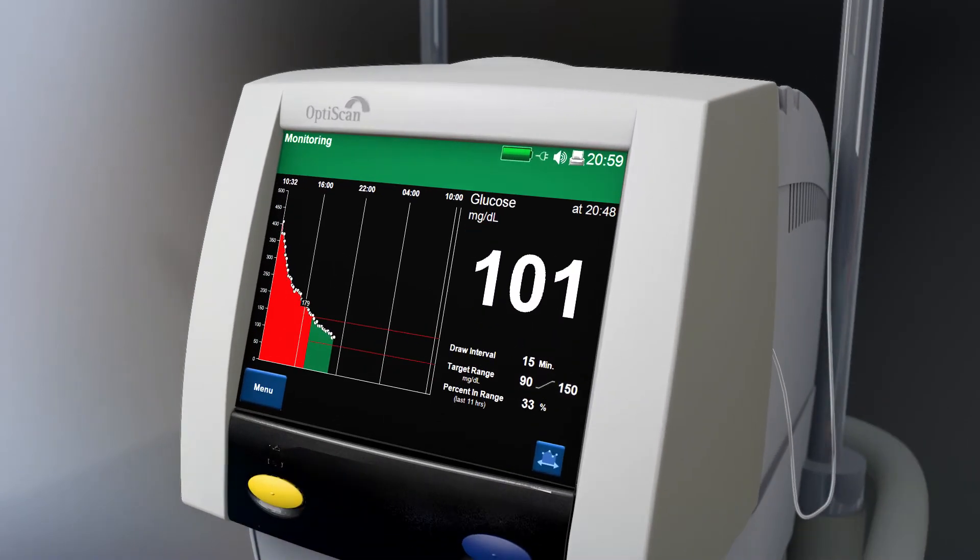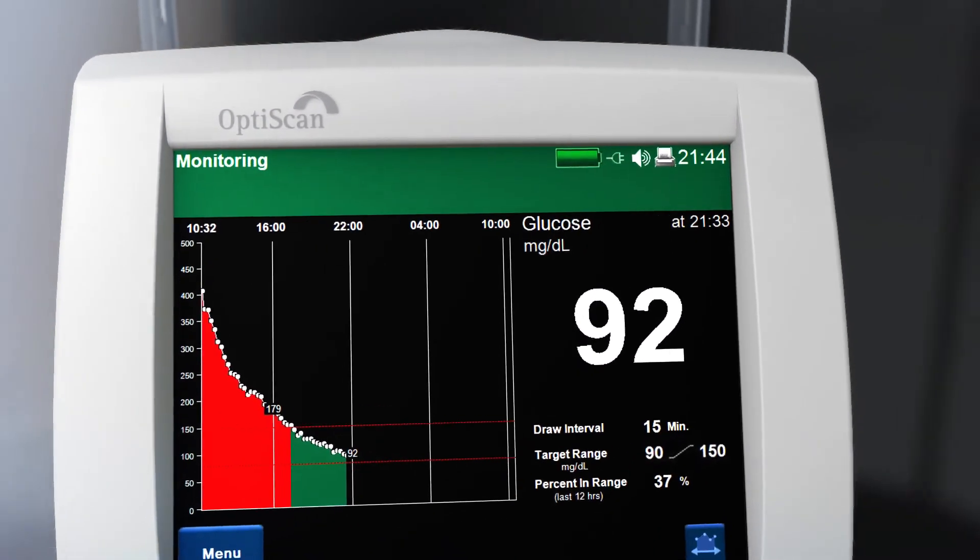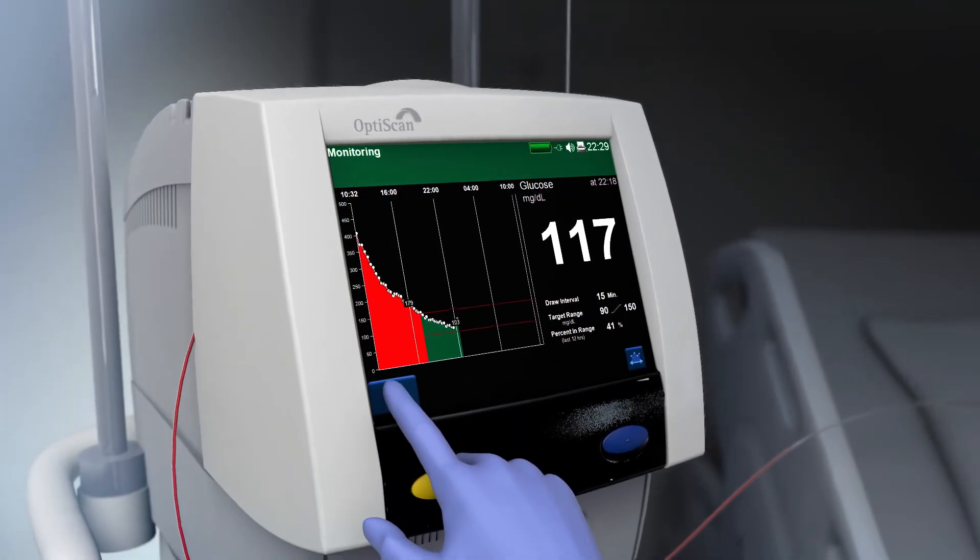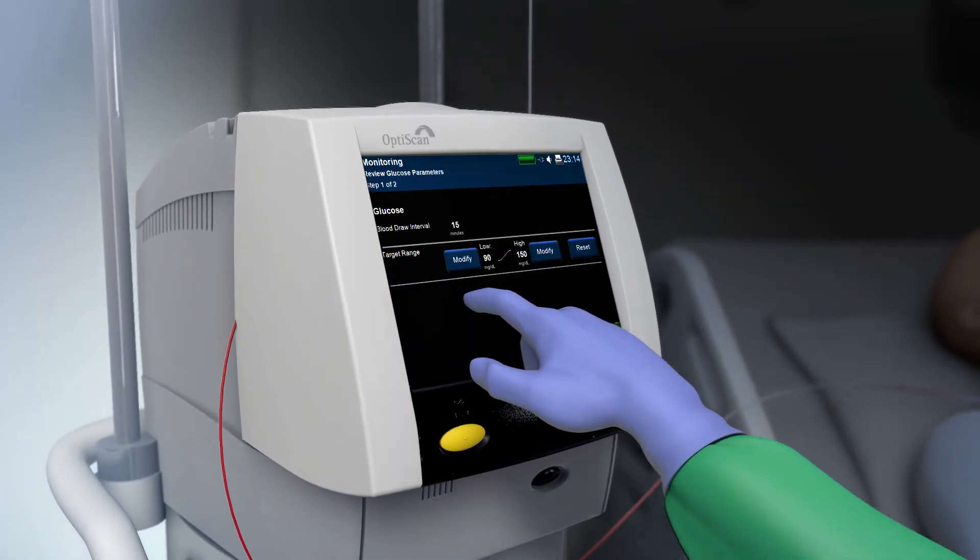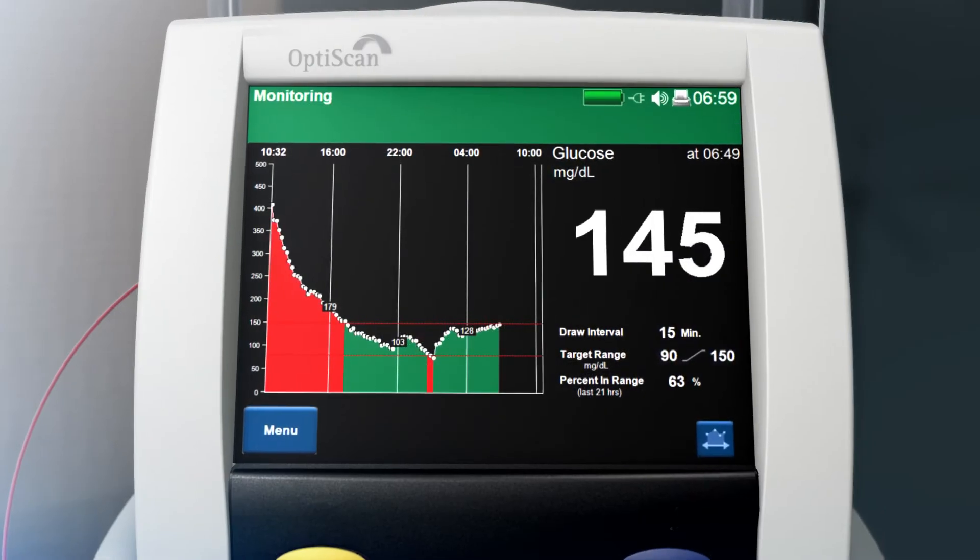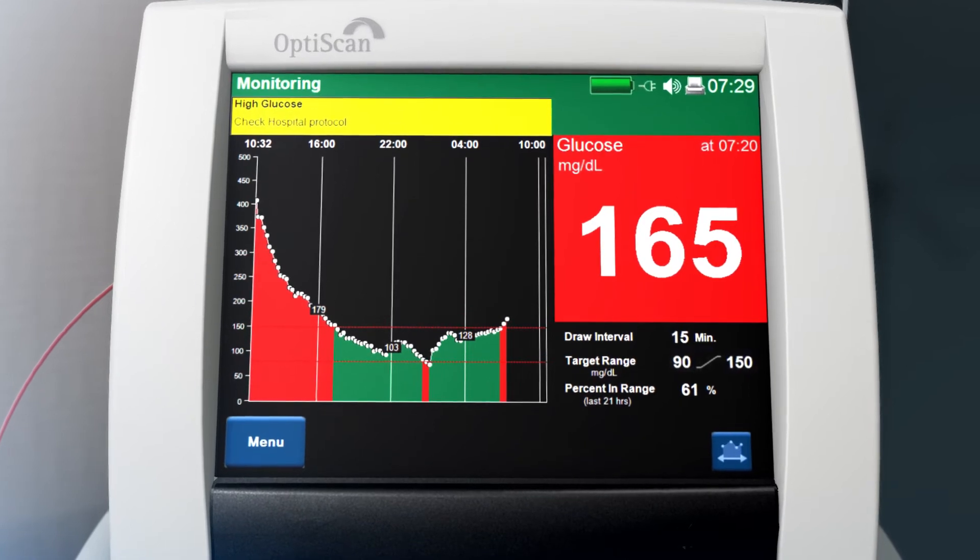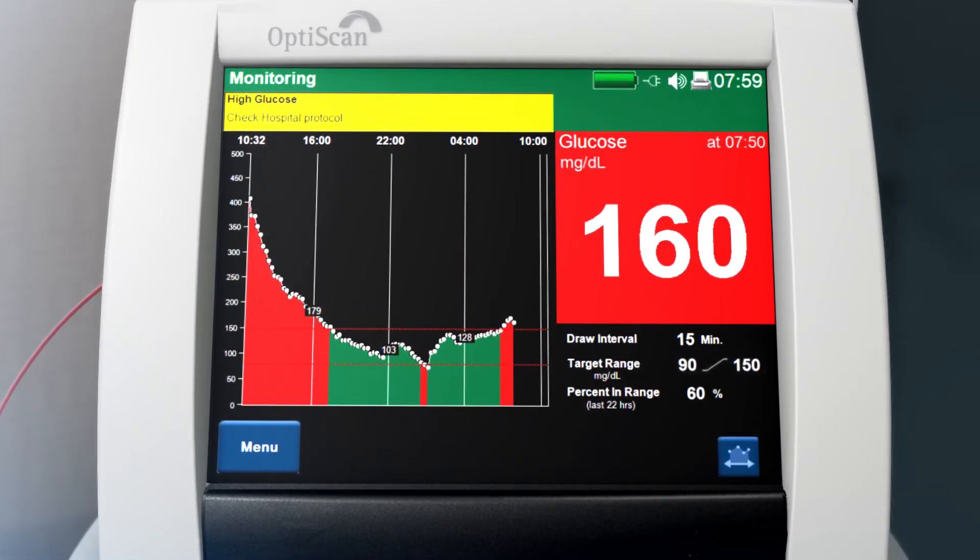Glucose results are displayed on the screen, along with a trending graph of the glucose values. The clinician can customize the target range according to hospital protocol and patient's condition. If the glucose levels move outside of the desired range, the OptiScanner alerts the clinician by displaying a glucose value against a red background.